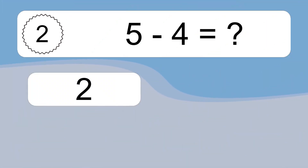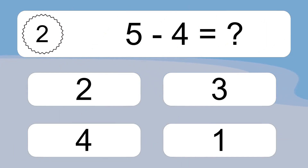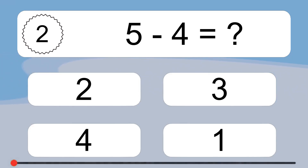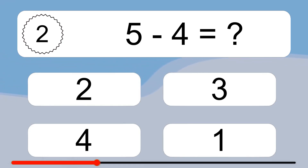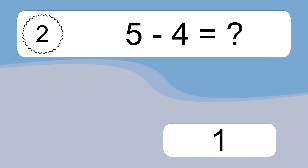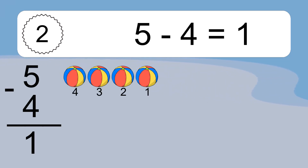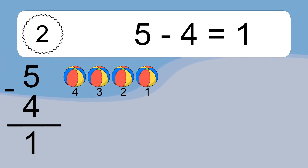5 minus 4 equals what? 5 minus 4 equals 1. Let's count it: 4, 3, 2, 1.